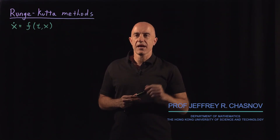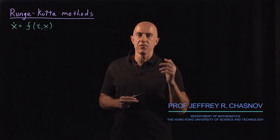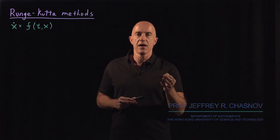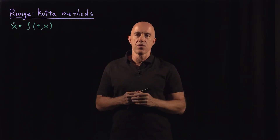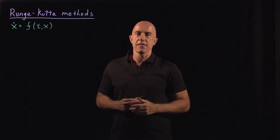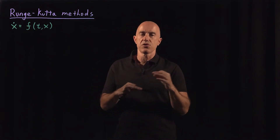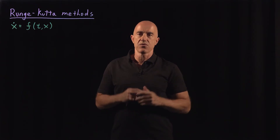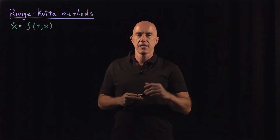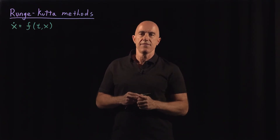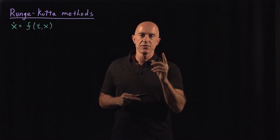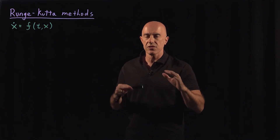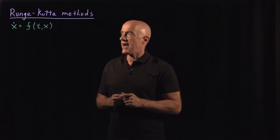In the last video, I derived the modified Euler method and then claimed that was one of a family of methods called second-order Runge-Kutta methods. In this video, I want to show you how to derive the full family of second-order Runge-Kutta methods. The algebra is a little bit heavy, so if you want to see the details, you should have a look at my PDF notes. So here I'll try and sketch the algebra.